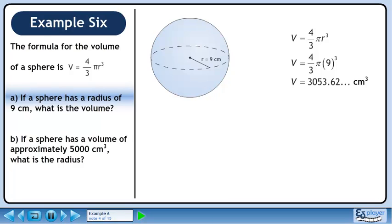Evaluate to get the irrational number 3053.62 continuing. The volume of the sphere is approximately 3054 cubic centimeters.